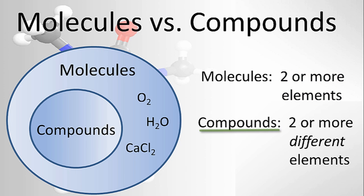For compounds, again, we have two or more elements, but this time it's two or more different elements. We'll have something like CaCl2. We have calcium and chlorines. Those are different elements, so that makes it a compound. It's also a molecule.